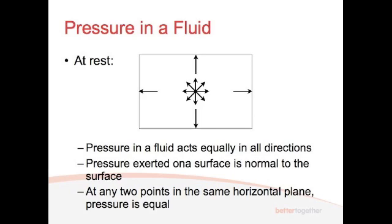So, when you get to a surface, it acts normally to the surface, but say you've got a surface inside there, the gas is acting on both sides of that surface at all times. It acts equally in all directions, and on the surface, it's normal to the surface, so 90 degrees or perpendicular to that surface. And at any two points in the same horizontal plane, the pressure is equal.